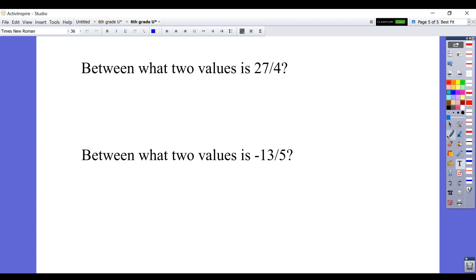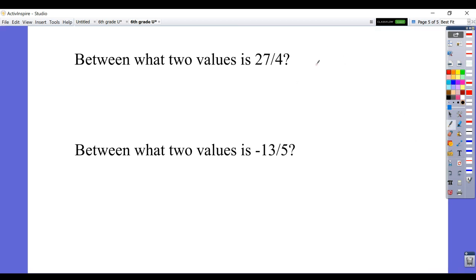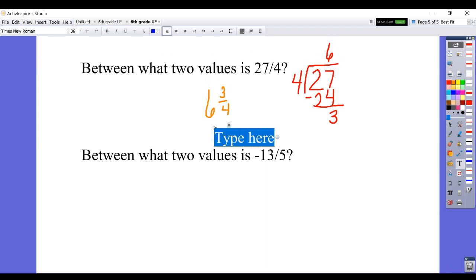Between what two values is 27 fourths? So what they want you to do is to think about this on a number line. So if we had 27 fourths, of course, that's improper. We would divide 4 into 27, which would go 6 times, giving us 24. Subtract, we get 3. So the mixed number here would be 6 and 3 fourths. So then the question is, what two values is 6 and 3 fourths between on a number line? It would be between the 6 and the 7.